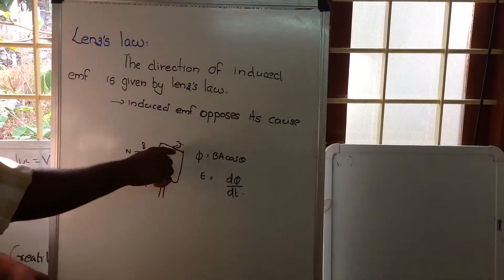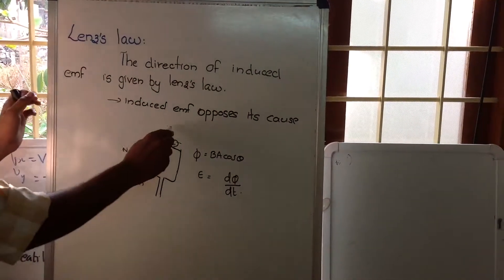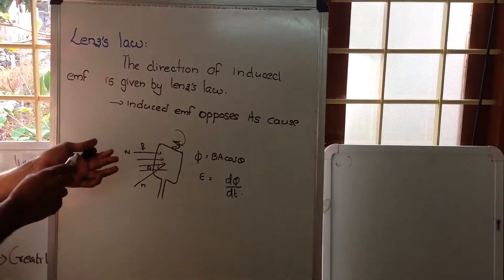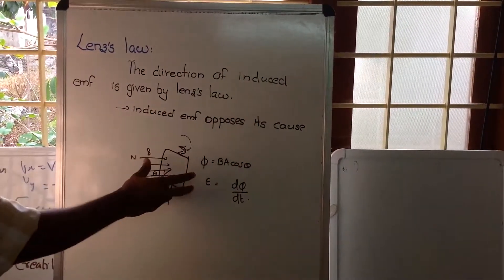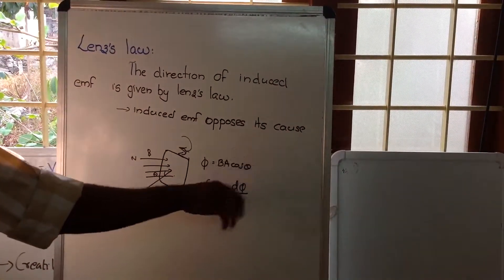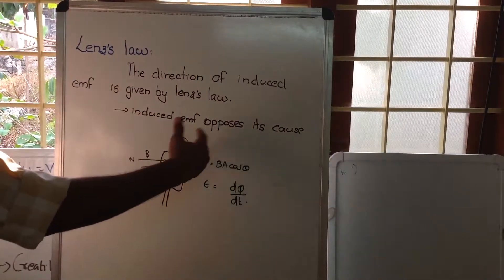Now, if the coil is rotating in the direction as shown in the figure, we know theta will be decreasing. If theta decreases, cos theta will be increasing. That means the flux is increasing.